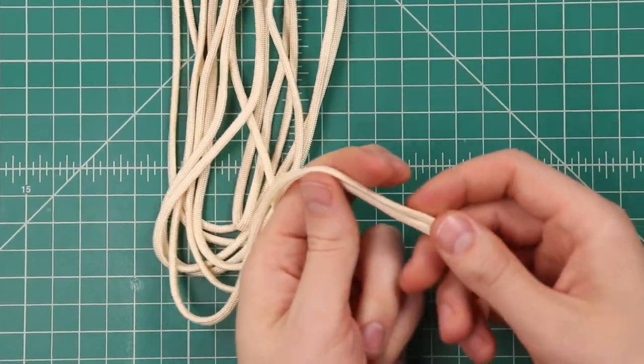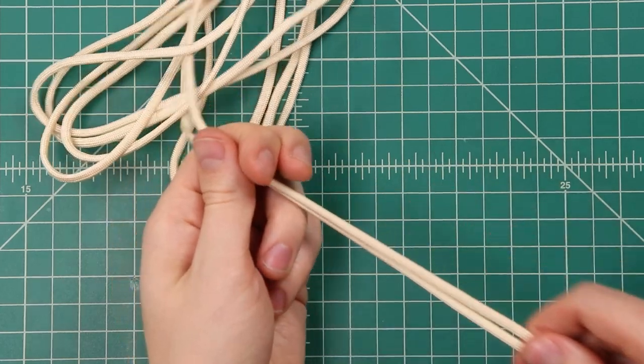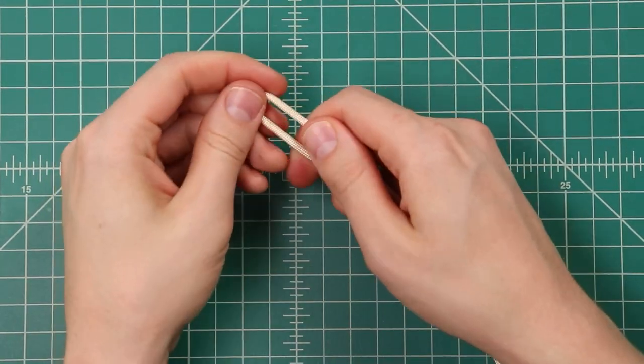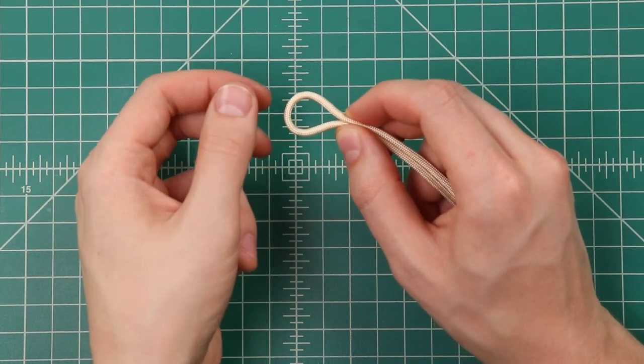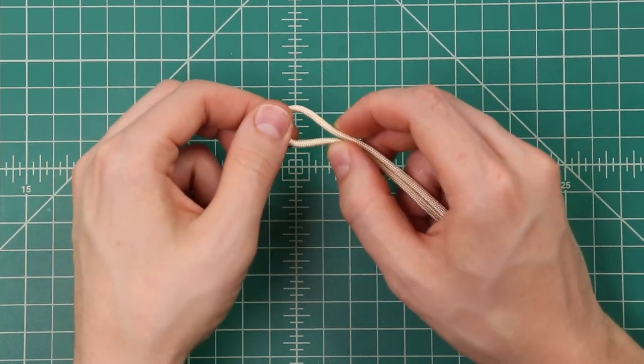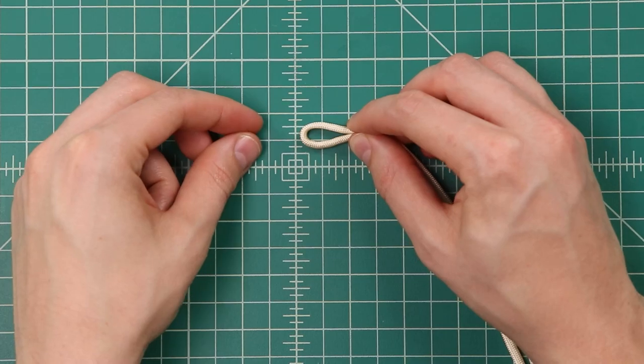Okay, so to start out, just like in a lot of bracelets, we'll line up the two ends and find the middle. It's going to be a knot and loop closure on this bracelet. So we'll start with the loop on this end, and you just want to leave a loop big enough to fit a diamond knot through. So that's going to be about a half inch.